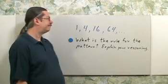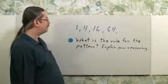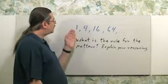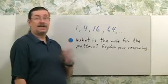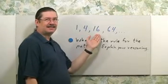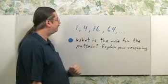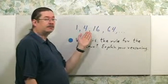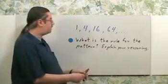What is the rule for the pattern? Well, to figure that out, ask yourself what can you do to 1 to get 4? Lots of things. I can add 3 to it, but adding 3 to 4 will not be 16. I can multiply 1 by 4.